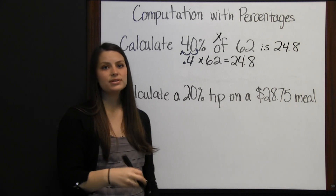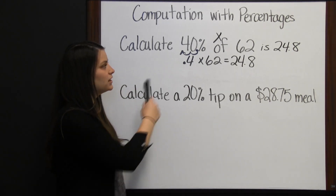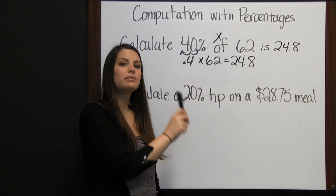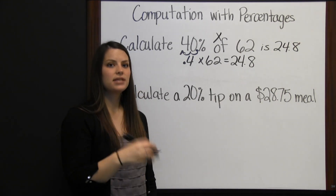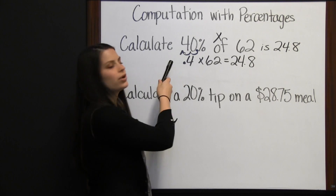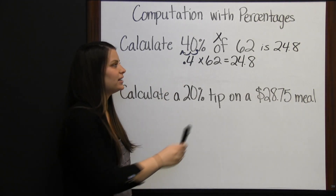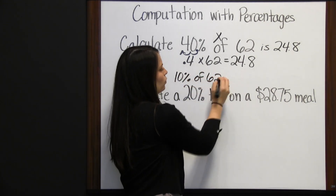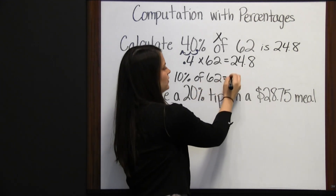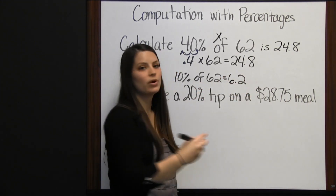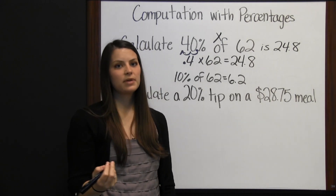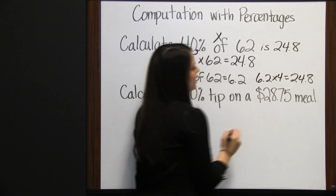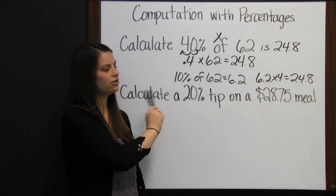You can use mental math to find percentages. On this one, we could find 10% of 62 first, then multiply that times 4, since 10% times 4 gives our 40% of 62. To find 10% of 62, move the decimal one place to the left, giving 6.2. Then multiply by 4: 6.2 times 4 gives 24.8. This is easier to do in your head.